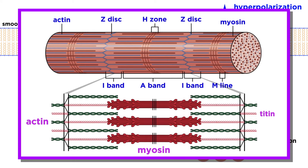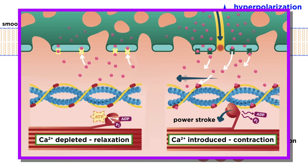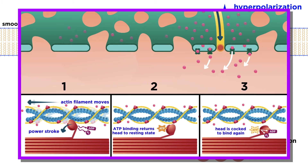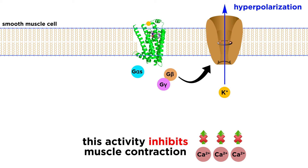As we recall from the anatomy and physiology series, when we learned about the mechanism of muscle contraction, calcium ions are a critical positive regulator of smooth muscle cell contraction, which act by binding to calmodulin. Once calcium ions have activated calmodulin, this complex stimulates myosin light chain kinase, which phosphorylates myosin light chain, leading to increased myosin-actin contraction cycling. In short, inhibition of calcium mobilization by beta-2 adrenoceptor activation further inhibits contractility of smooth muscle cells.